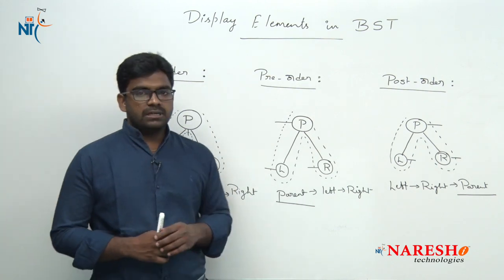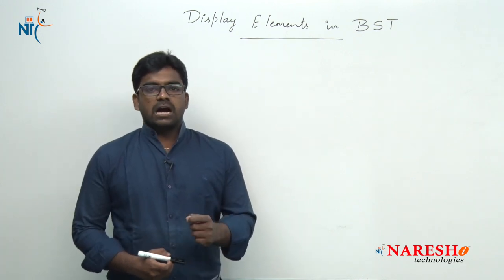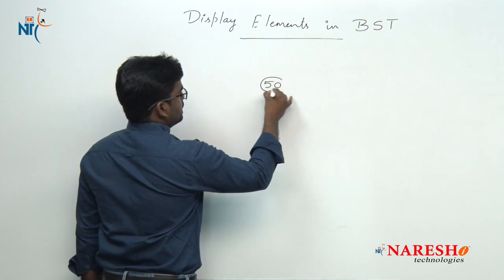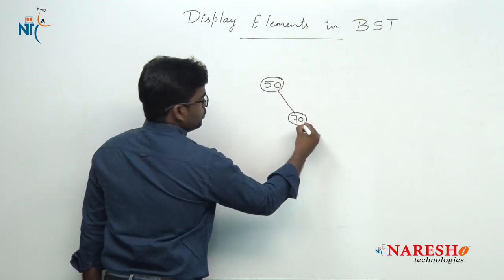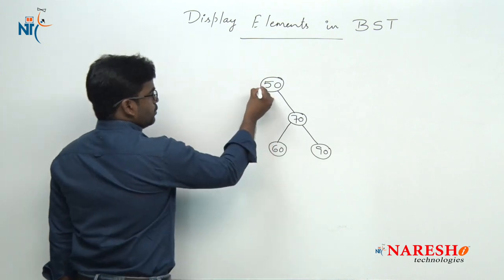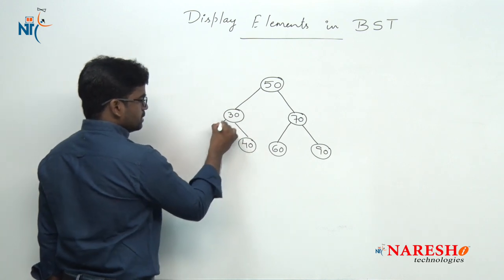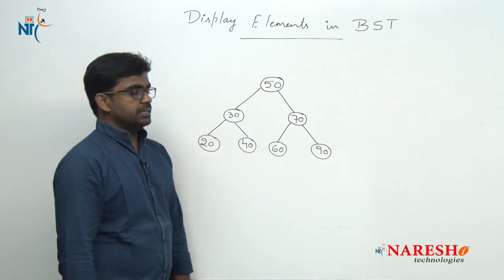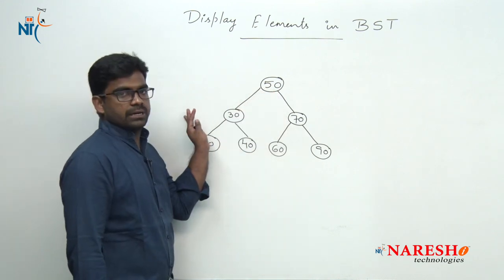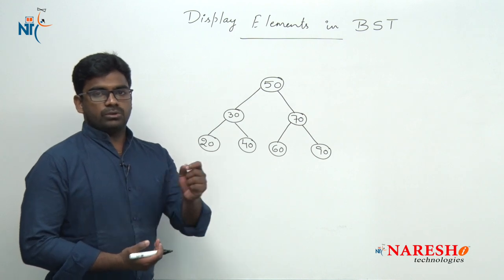Now let's discuss with one example. Suppose we insert the values: 50, 70, 90, 60, 30, 40, and 20 into a binary search tree. When comparing with the parent node, if the value is smaller it goes to the left, and if it is larger it goes to the right. Now, if we want to traverse using in-order traversal on this constructed tree: